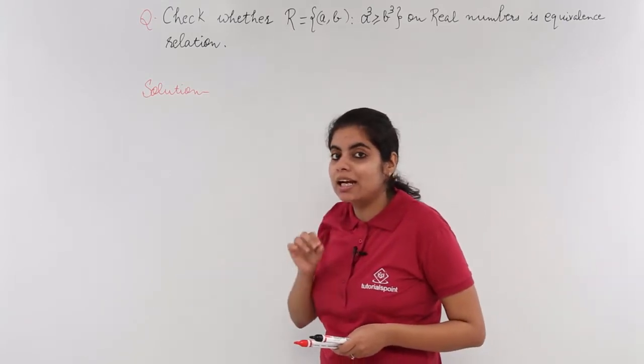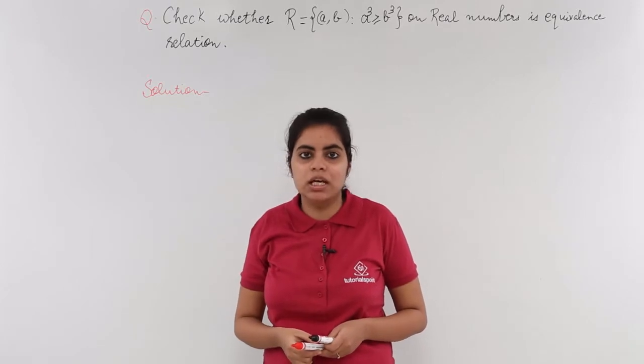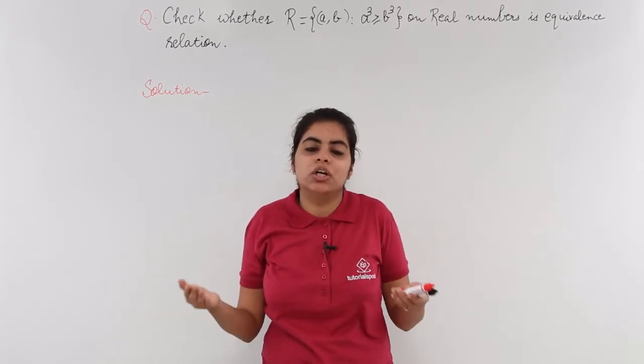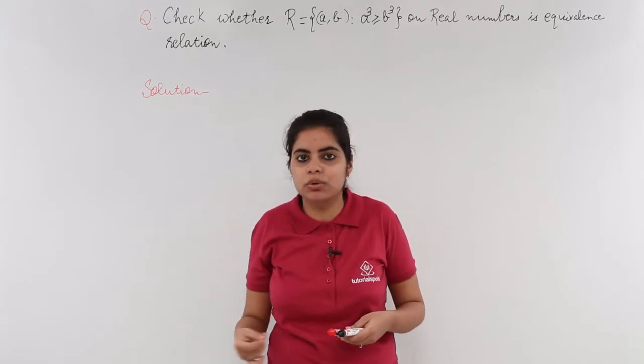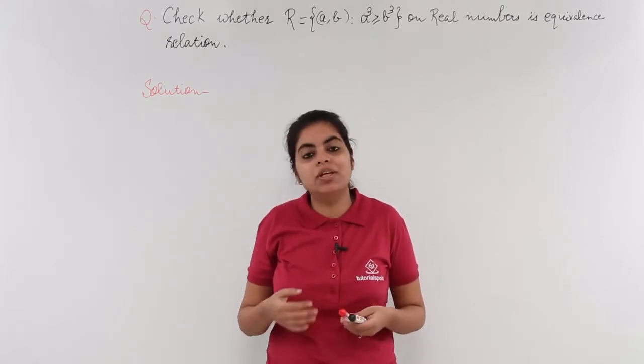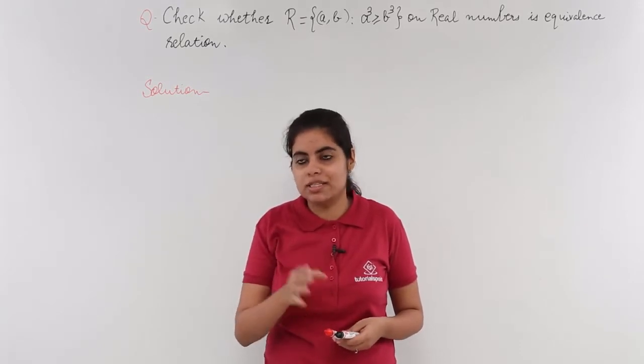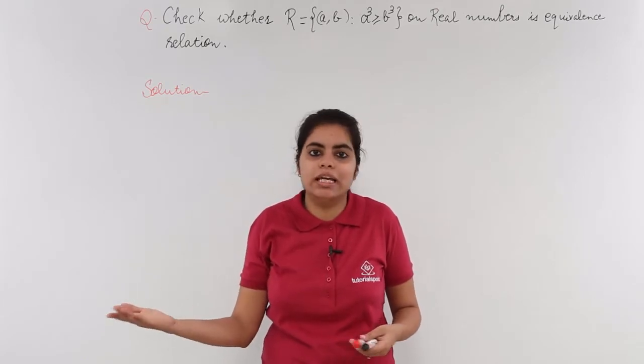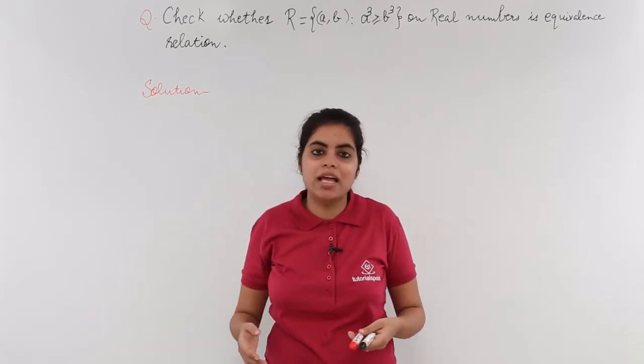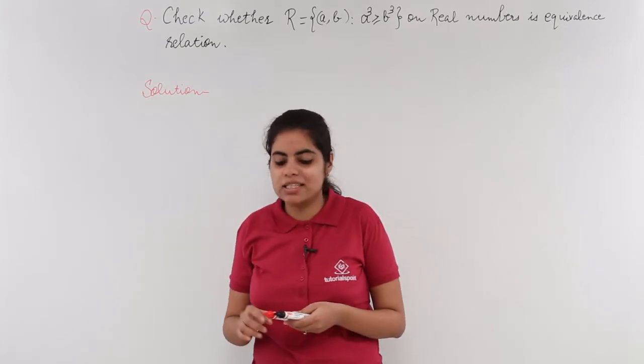We need to check this for all real numbers. It's not possible to check all numbers one by one, so we'll generalize the solution by testing three categories: reflexive, symmetric, and transitive. If it follows all three, it's an equivalence relation; if not, it isn't an equivalence relation. Let's get started.